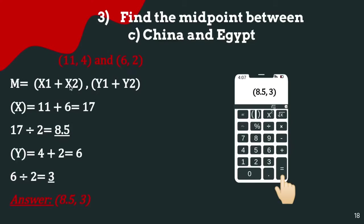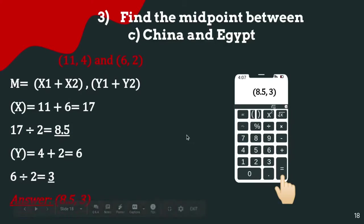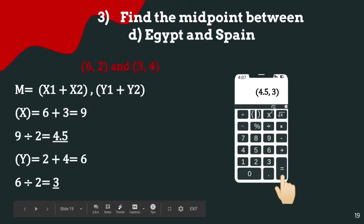Find the midpoint between China (11, 4) and Egypt (6, 2). Using the midpoint formula: x = (11 + 6)/2 = 17/2 = 8.5, and y = (4 + 2)/2 = 6/2 = 3. The overall answer is (8.5, 3).